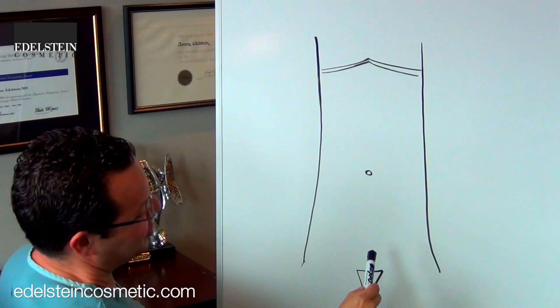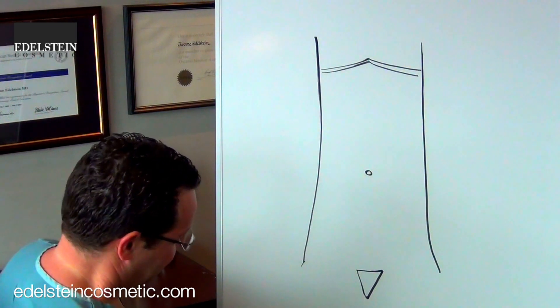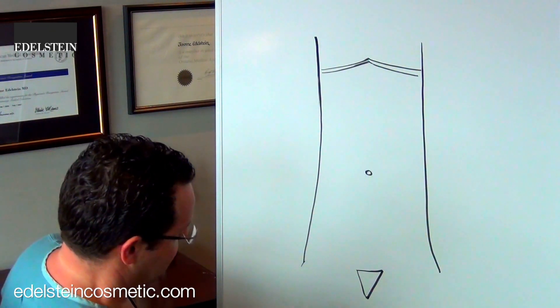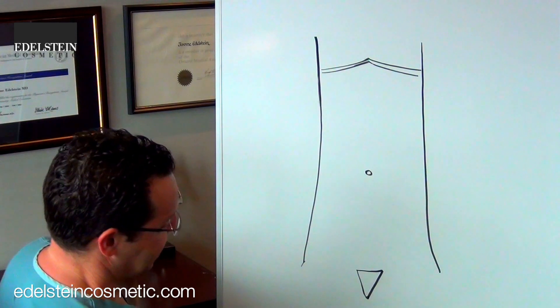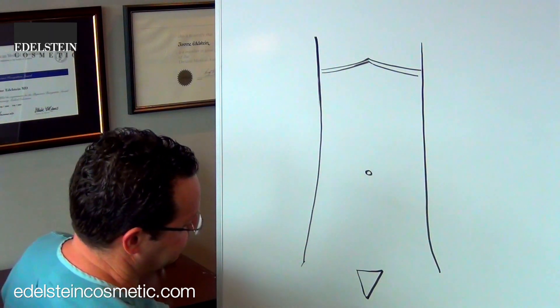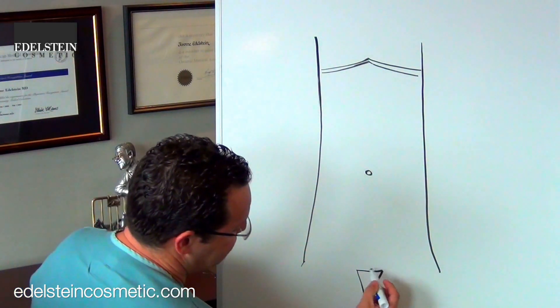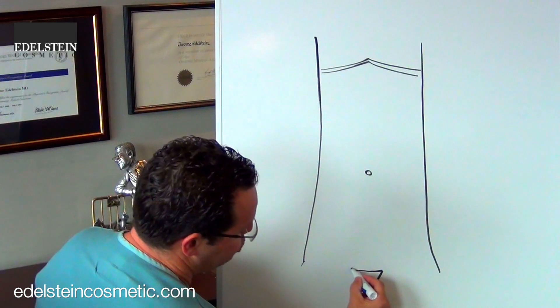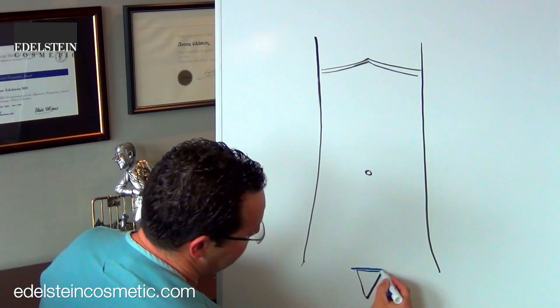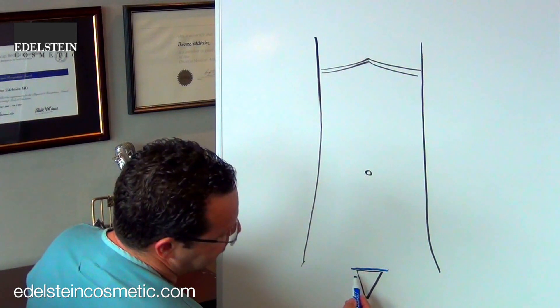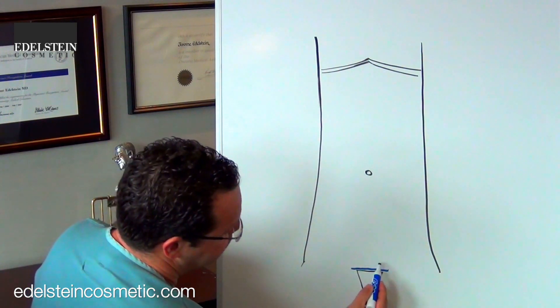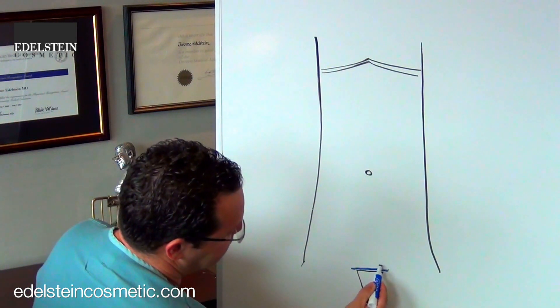I talked about the incision in the general overview. We put the incision very low, just above the pubic area. If you have a cesarean scar, let's say that this is your cesarean scar, we'll put the incision below that so your cesarean scar is removed.